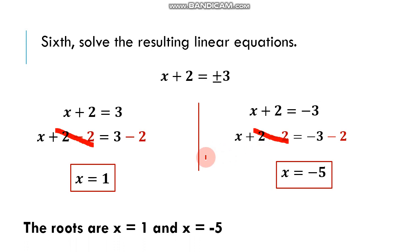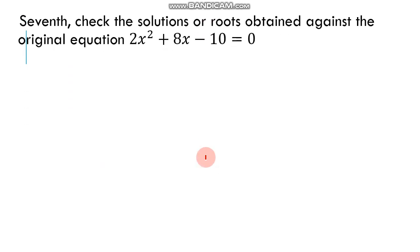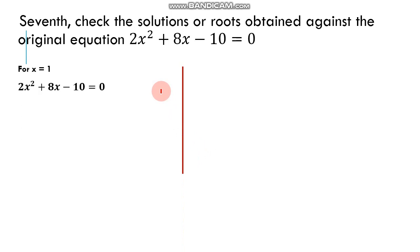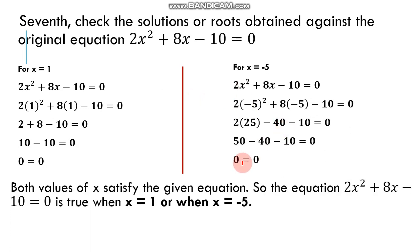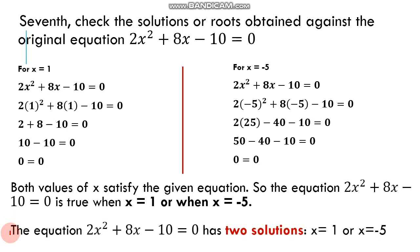The roots are x equals 1 and x equals negative 5. Let's check these solutions against the original equation 2x squared plus 8x minus 10 equals 0. Substituting x equals 1 gives 0 equals 0, and substituting x equals negative 5 also gives 0 equals 0. Both values satisfy the equation, so the equation is true when x equals 1 or x equals negative 5, and has two solutions.